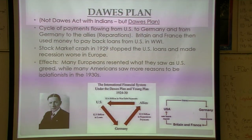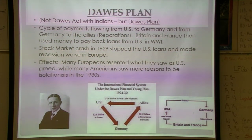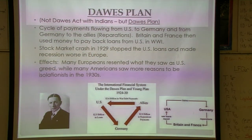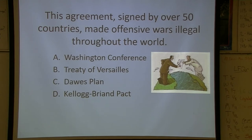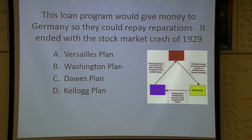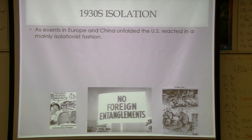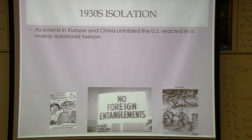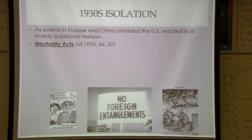In the 1930s, jumping ahead a little, the United States became more isolationist. We officially passed Neutrality Acts in Congress when things were happening in other parts of the world. We weren't exactly as neutral as we said we were, but we officially declared it.